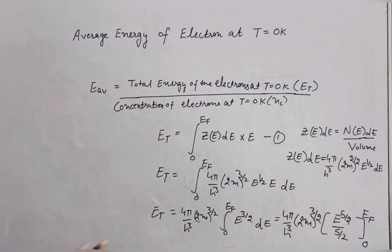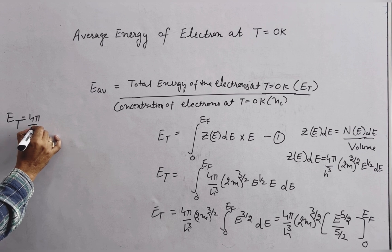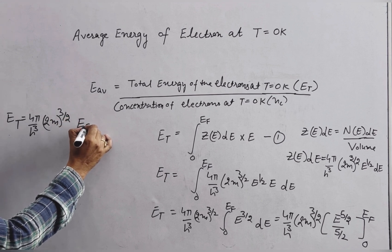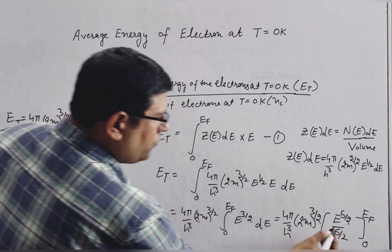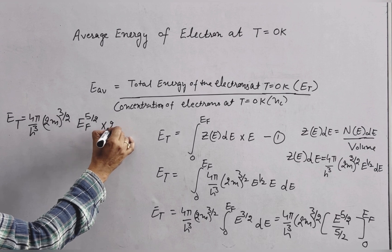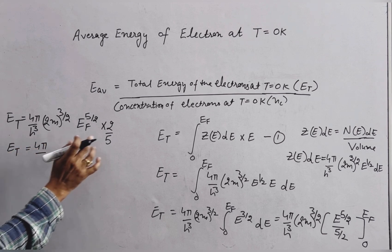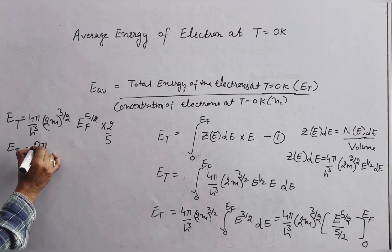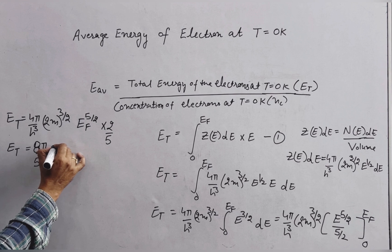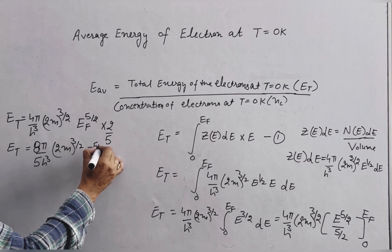Applying the limits of integration, ET equals 4π by h-cube, into 2m raised to power 3 by 2, into EF raised to power 5 by 2, multiplied by 2 by 5 (since the lower limit gives zero). Simplifying, 4 multiplied by 2 gives 8, so ET equals 8π by 5 h-cube, into 2m raised to power 3 by 2, into EF raised to power 5 by 2. Let this be equation number 2.